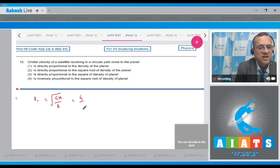So look, V is proportional to r and V is proportional to root of rho. The velocity, the orbital velocity - the correct option is directly proportional to square root of density. So this answer is second option.